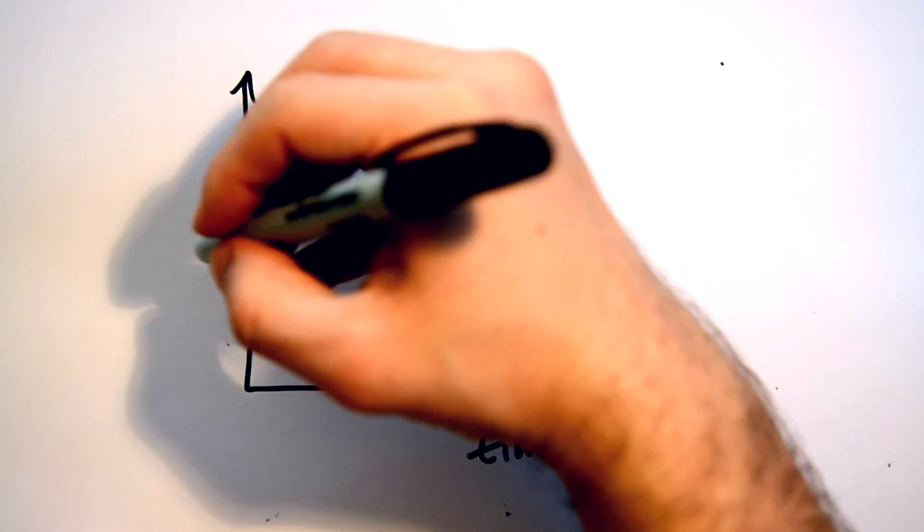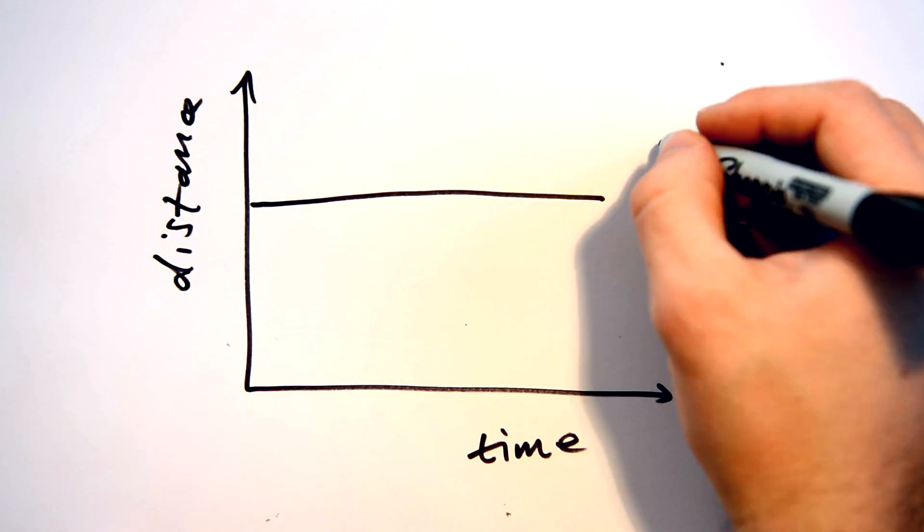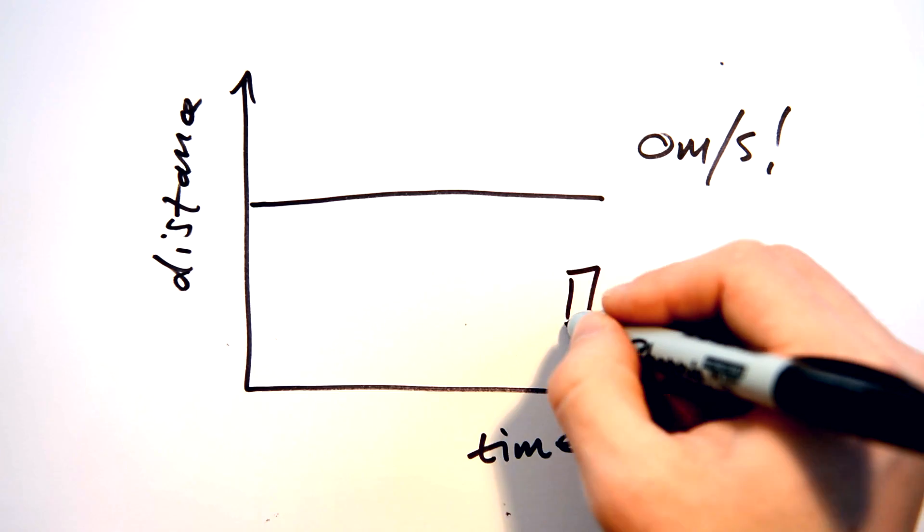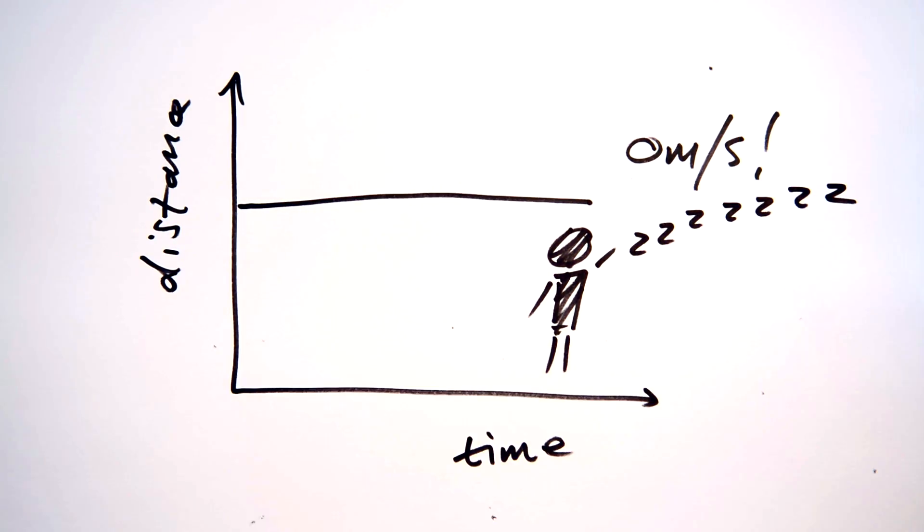Of course, if there was a horizontal line on this distance time graph, that would mean that Bob would not be moving for that period of time, as his distance actually isn't increasing.